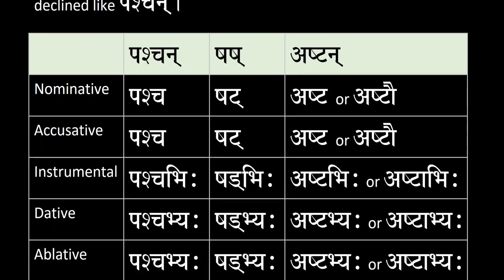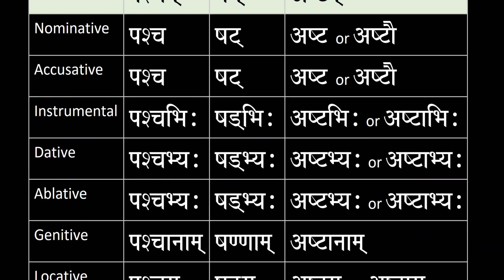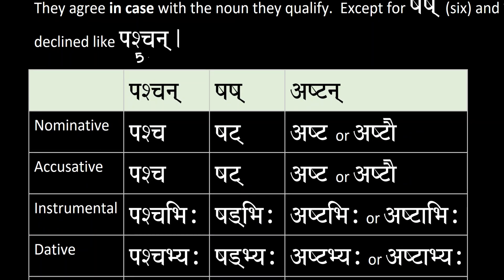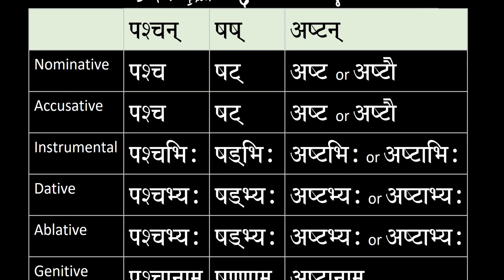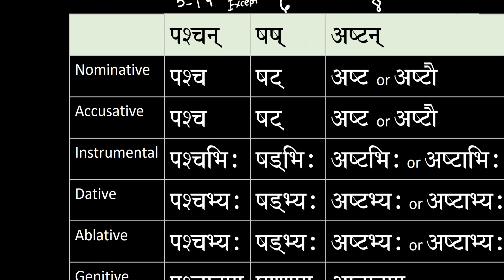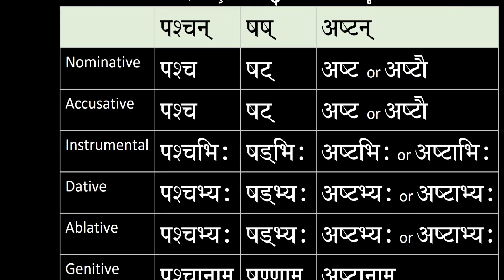So that is the declension of those types of numbers. Again, this is from five to nineteen, except for number six and number eight. That is the declension for number six, Ṣaṣ, and the declension for number eight, Aṣṭan.